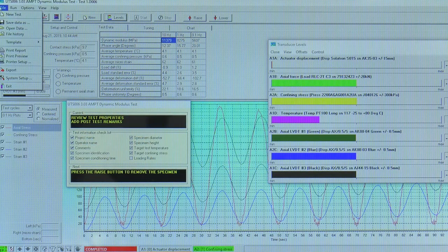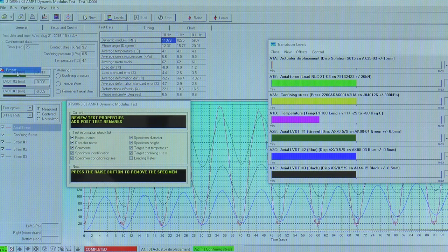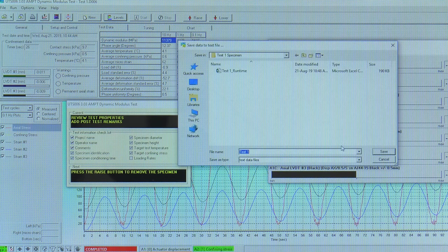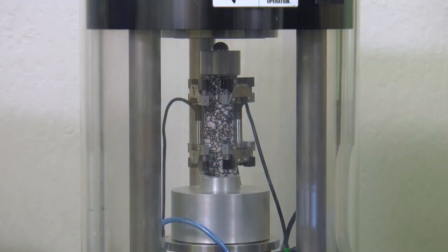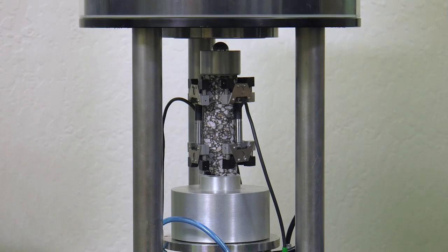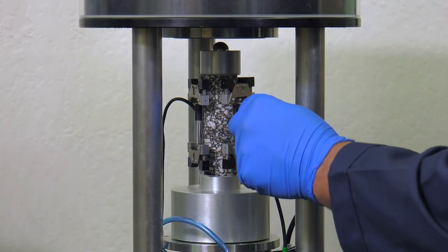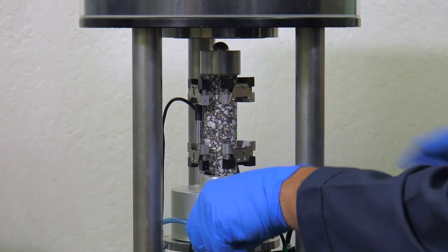When the test is complete, export the data. Once acceptable data has been collected, open the AMPT conditioning chamber and remove the tested specimen. Repeat this process for the remaining test specimens.